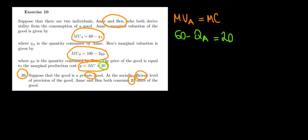So that's going to be 20. The quantity optimally for Anne will be equal to 40 units.